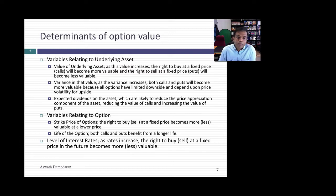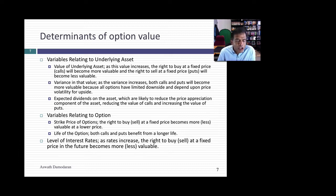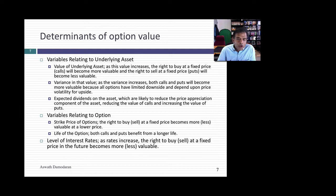That sounds mysterious at first, but remember those payoff diagrams? You had limited losses and potentially unlimited profits on the call option, and limited losses with very large profits on the put option. Variance is your friend because you're protected on the downside. So the greater the variance in the value of the underlying asset, the more valuable options on that asset become. The third variable is dividends on the underlying asset. When a stock pays a dividend its price drops, so call options become less valuable and put options become more valuable. If you expect dividends over the life of the option, you reduce the value of calls and increase the value of puts.